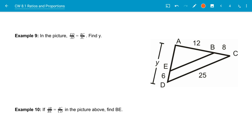In this example, they want us to find Y. They give us the proportion that is true: ED over AD is equal to BC over AC.